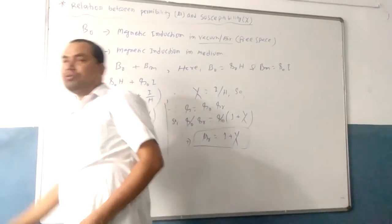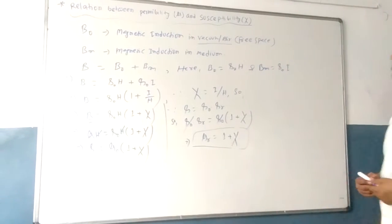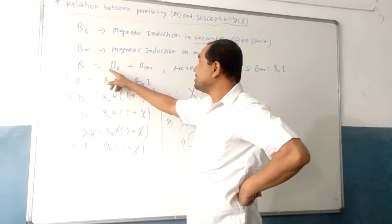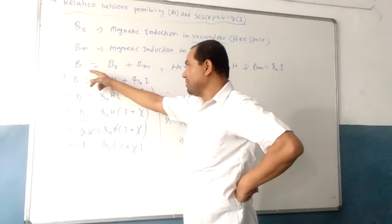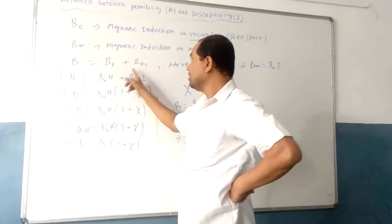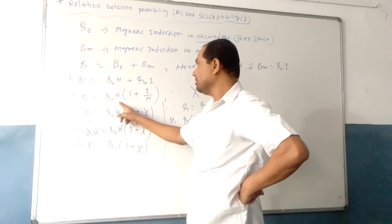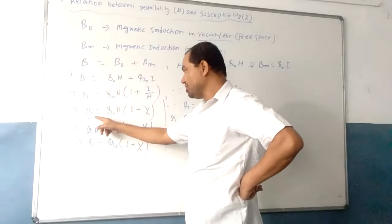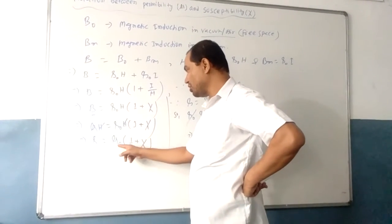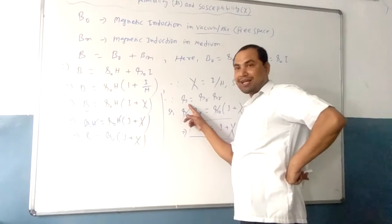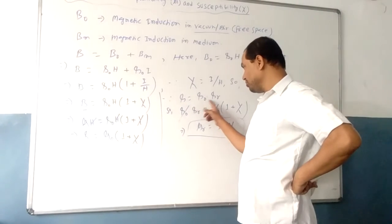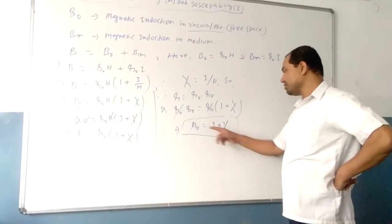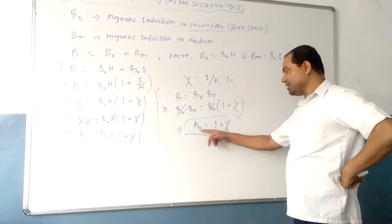This is the mathematical approach — you need to practice it. To summarize: if the magnetic material is kept in a magnetic field, the total magnetic field B equals μ0·H plus μ0·I, which equals μ0·H·(1 plus I/H). Since I/H equals susceptibility χ, we get B equals μ0·H·(1 plus χ). Therefore μ equals μ0·(1 plus χ), and μr equals 1 plus χ. This is the relation between permeability and susceptibility.